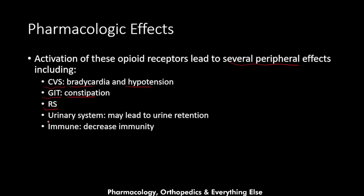Methadone leads to effects on the respiratory system in the form of bronchoconstriction, and effects on the urinary system which may lead to urine retention due to increased tone of the bladder and urethral sphincter, trapping the urine. It also leads to effects on the immune system causing decreased immunity due to inhibition of lymphocytes.